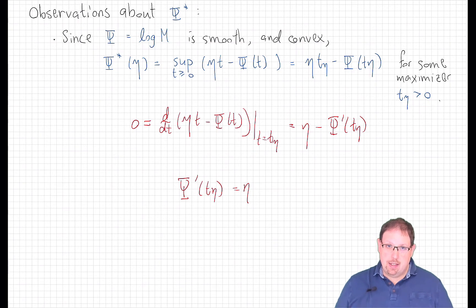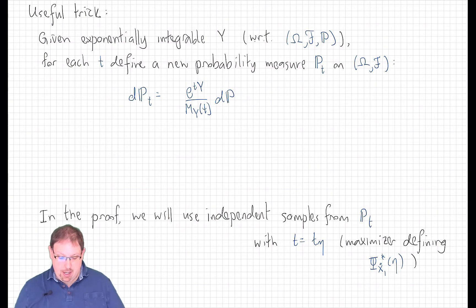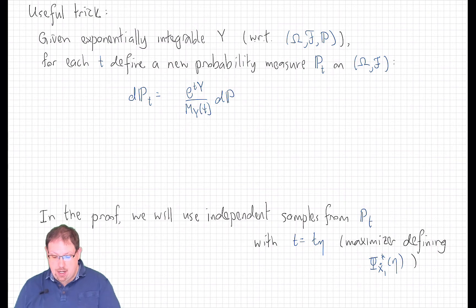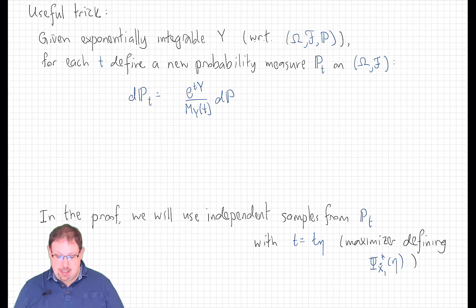To see how, let's remind ourselves of a nice trick: a change of measure that came in handy in the previous lecture. If y is any exponentially integrable random variable on a probability space omega, F, P, then for each real number t, we can define a new probability measure P_t on the same measure space, which just has a density with respect to the old probability measure. This density is e to the ty divided by the moment generating function of y.